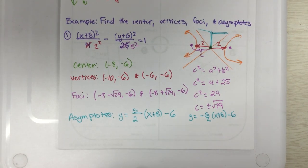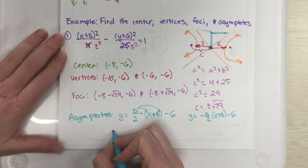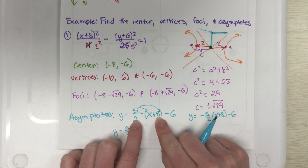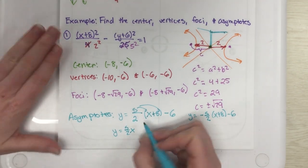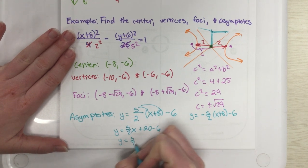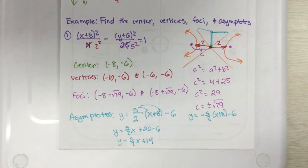So, y is 5 half x. 8 divided by 2 is 4, times it by 5, I get 20 minus 6. So, y is 5 over 2 x. 20 minus 6 is plus 14. So, that is one equation.